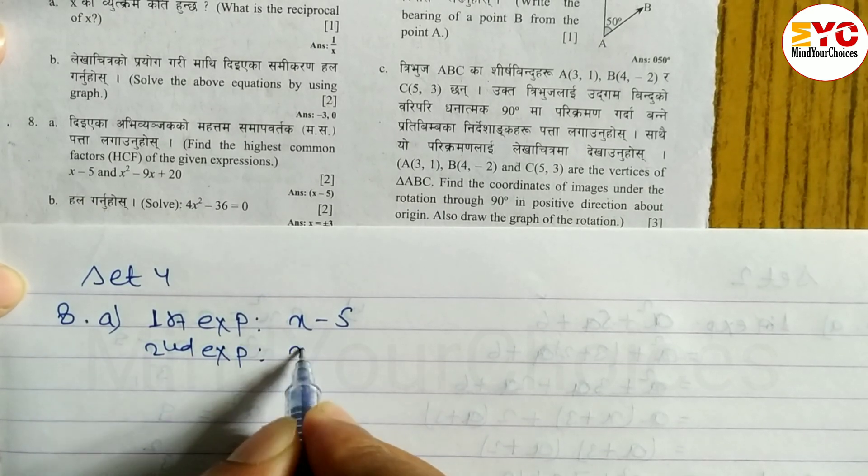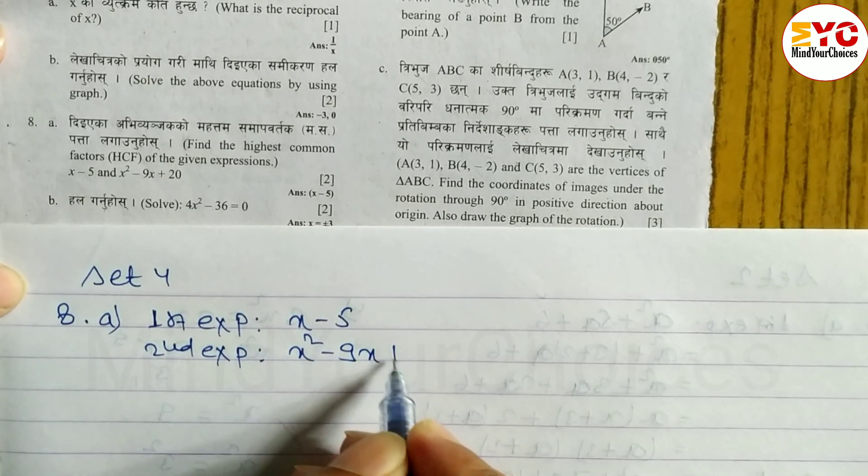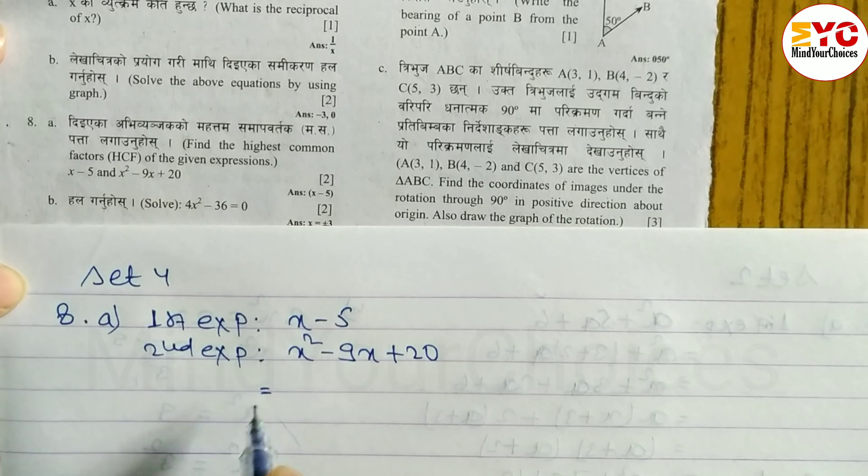second expression what is it? x-square minus 9x plus 20. We have to factorize this.